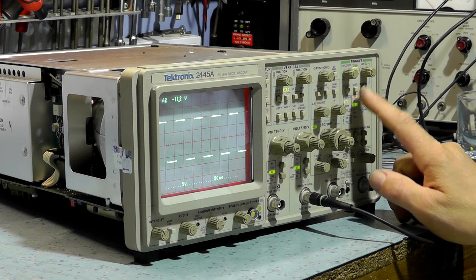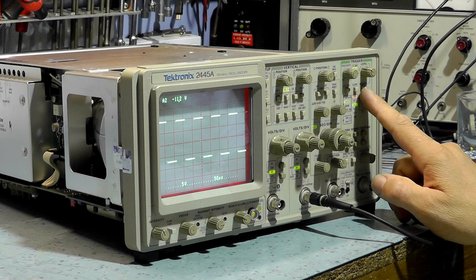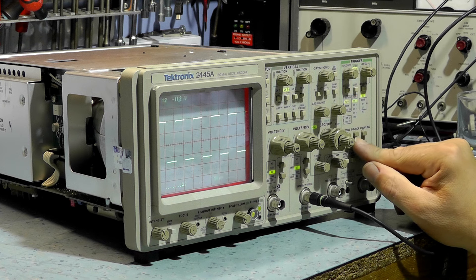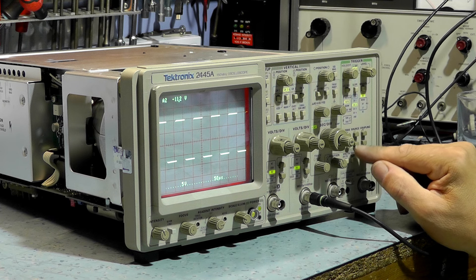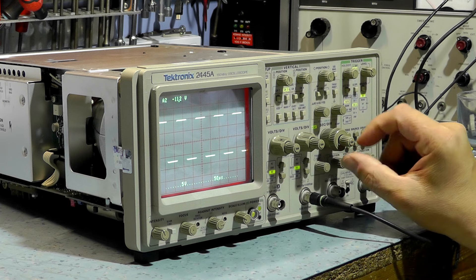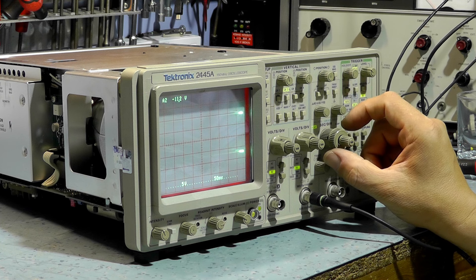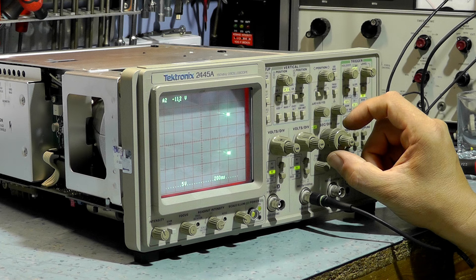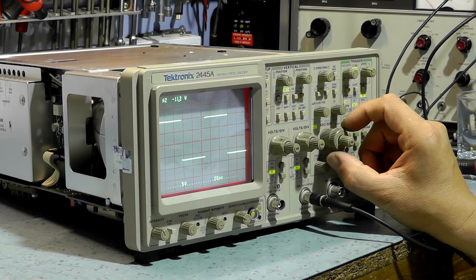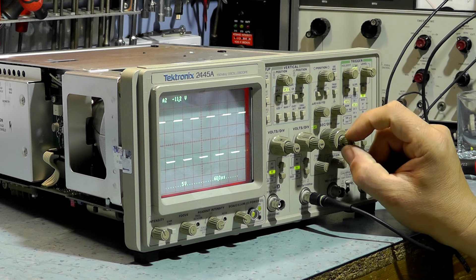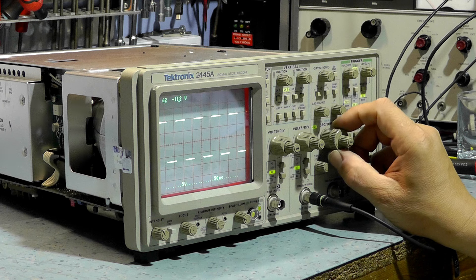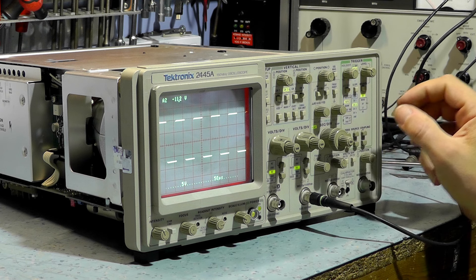Let's try to be triggering with channel 2. And channel 2. That's the source selected down here. Not sure that is that switch, actually. That's something in the vertical amplifier, I think, in the horizontal amplifier.